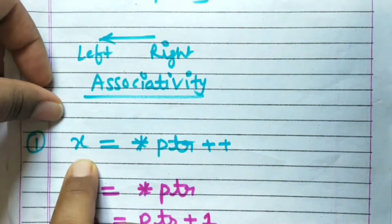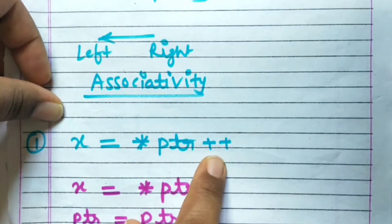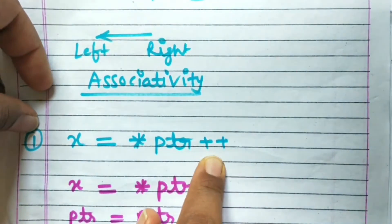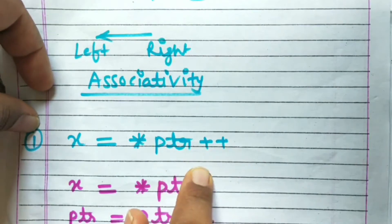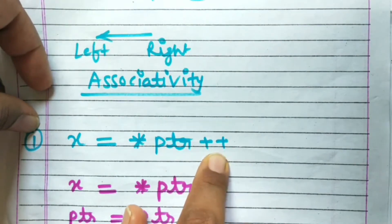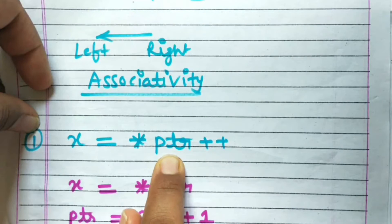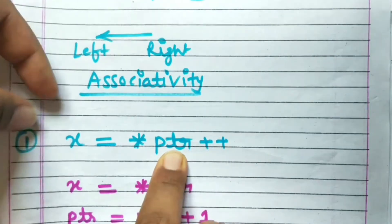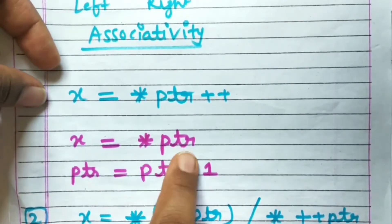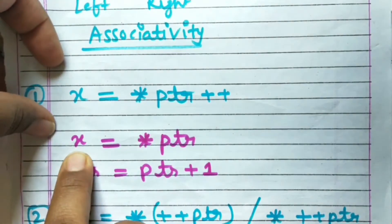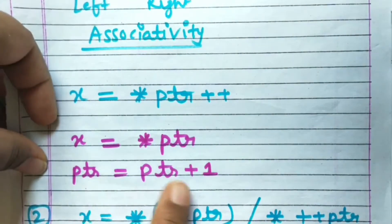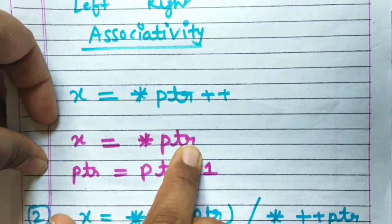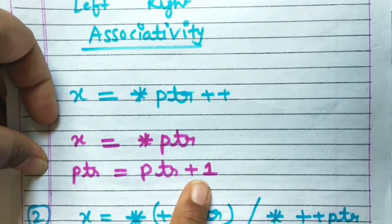The first example is x = *ptr++. This expression evaluates from right to left, so the post-increment operator will be applied to PTR. Since this is a post-increment operation, the value pointed by PTR will first be assigned to x, and then the address will be incremented by 1. That is: x = *PTR, and then PTR = PTR + 1.